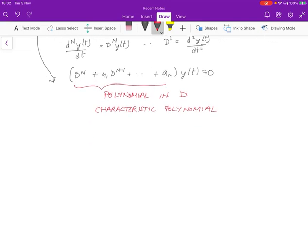The characteristic polynomial is nothing more than the definition of the system ignoring what the right-hand side says. If you treat this as a polynomial in d, from the fundamental theorem of algebra, this can be represented as the product of these values: (d minus lambda 1)(d minus lambda 2) up to (d minus lambda n) yt equals 0. For now, let's assume that these lambda i's are unique.